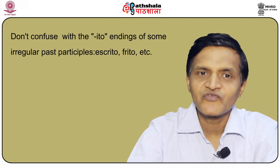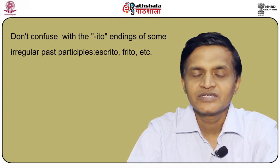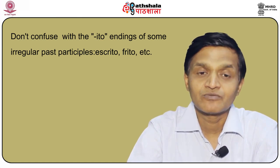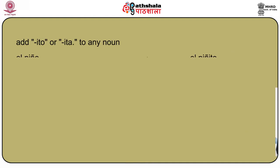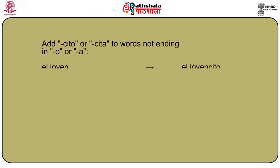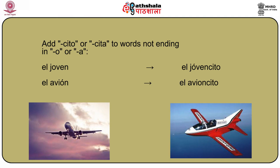Diminutives are used more frequently in Spanish than in English. Different regions of Spain and Latin America have their own unique ways of creating diminutives, but the most common one is a form of -ito. To create a diminutive, drop the -o or -a from just about any noun and add -ito or -ita depending on whether it is masculine or feminine. For example, el niño becomes niñito, el joven becomes el jovencito, el avión becomes el avioncito. The famous song 'Chiquitita' comes from chica — chica becomes chiquitita.